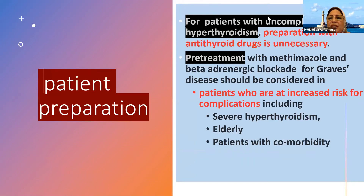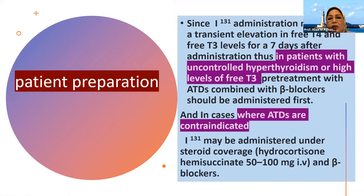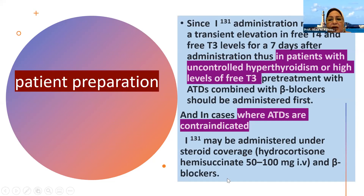Pretreatment with methimazole and beta-adrenergic blockers for Graves' disease should be considered in patients at increased risk of complications, including severe hyperthyroidism, elderly patients, and patients with comorbidities. Since radioactive iodine administration may cause a transient elevation in free thyroid hormones for seven days after administration, in patients with uncontrolled hyperthyroidism or high levels of free T3, pretreatment with antithyroid drugs combined with beta-blockers should be administered first. In cases where antithyroid drugs are contraindicated, steroids and beta-blockers should be used instead.